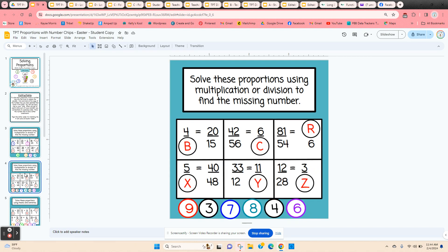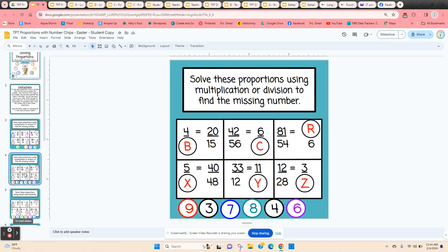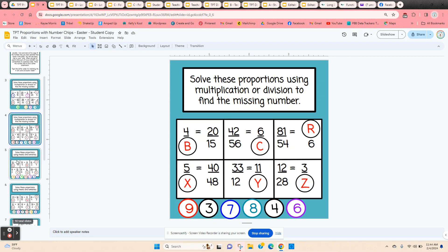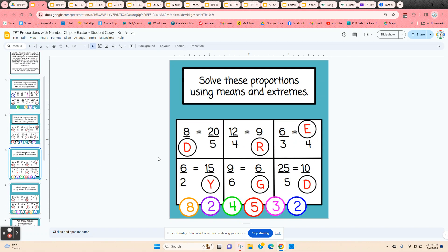They have another slide with scaling up and scaling down. Now these proportions, they cannot scale up or scale down, so they have to use means and extremes or cross multiplication. The easy way to do this is just make sure the students know that numbers that are diagonal across from each other are going to have the same product.